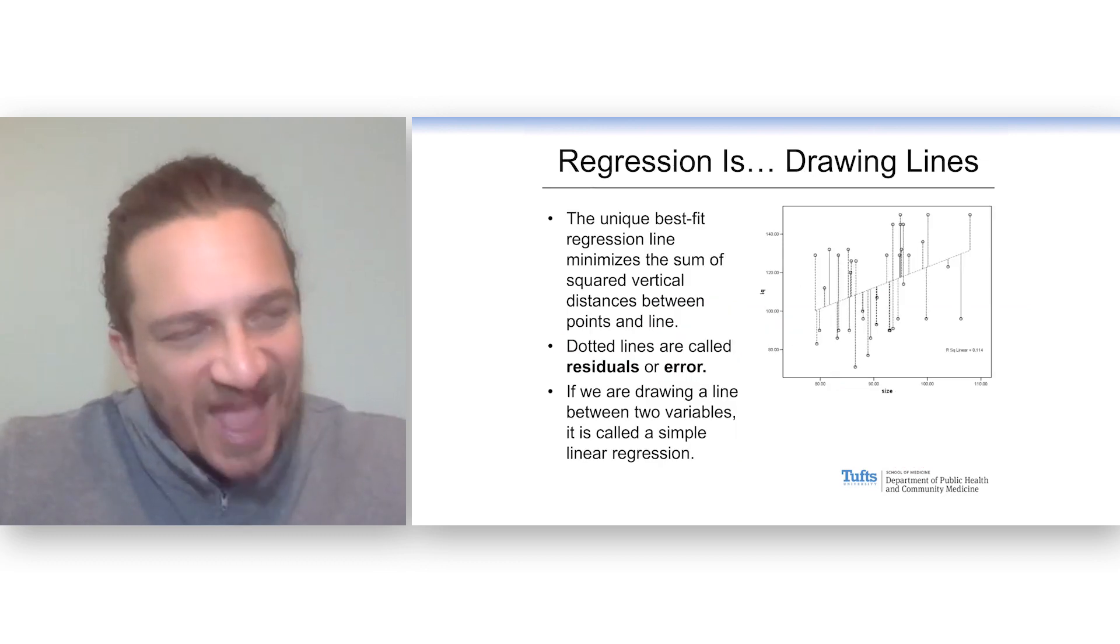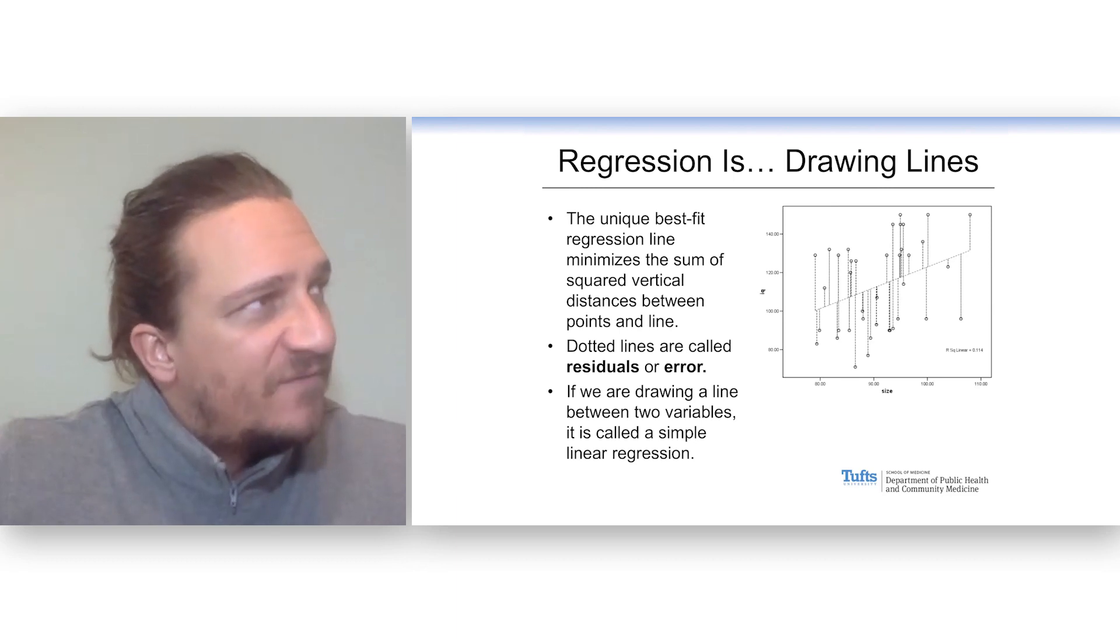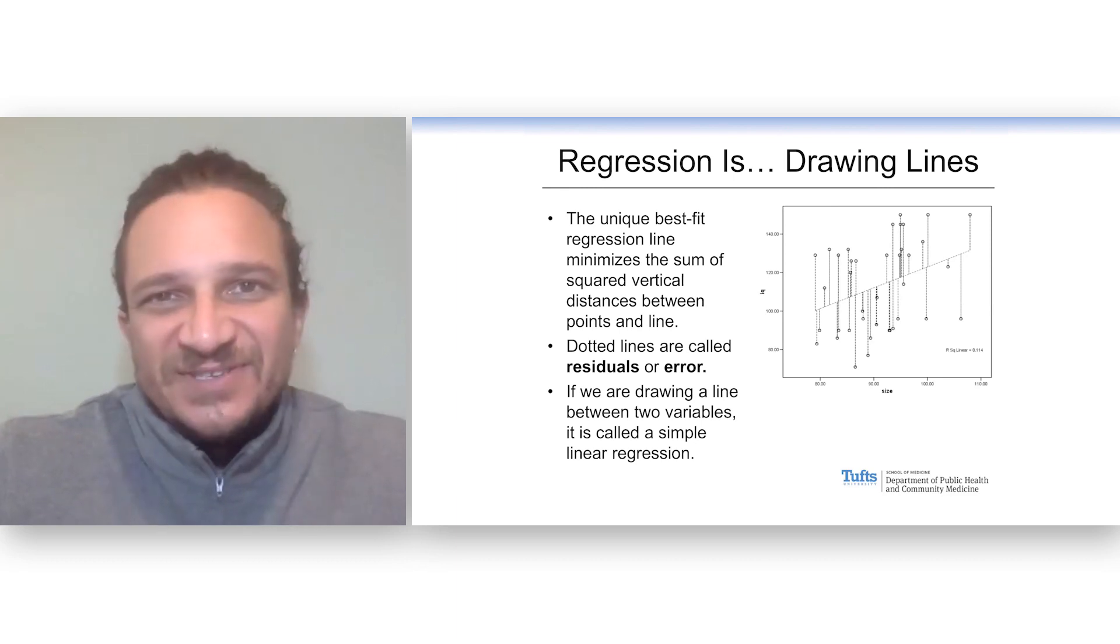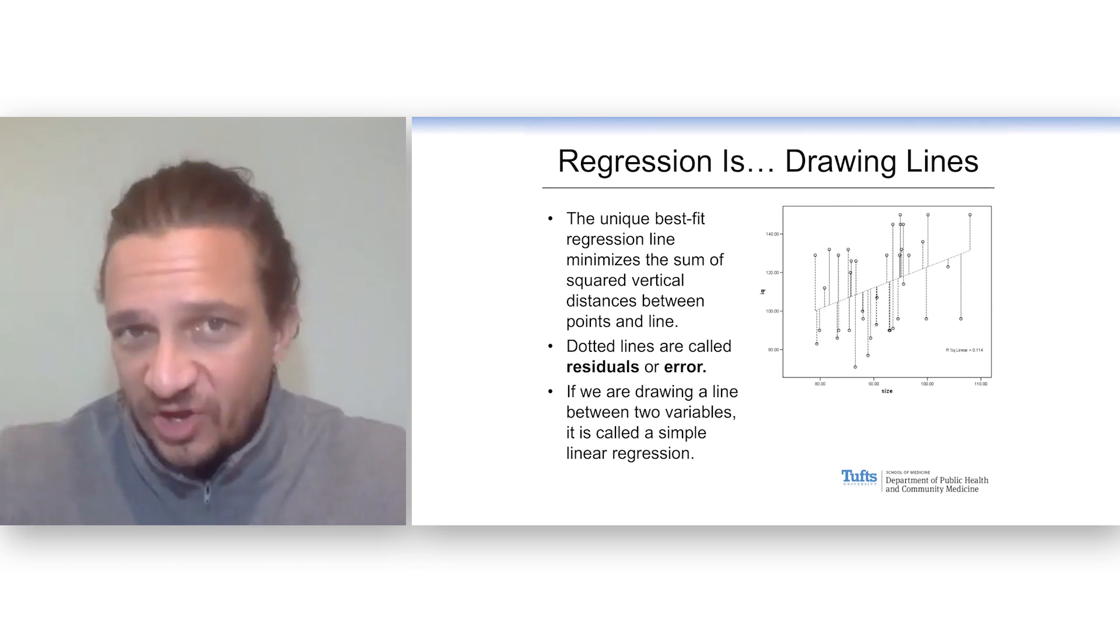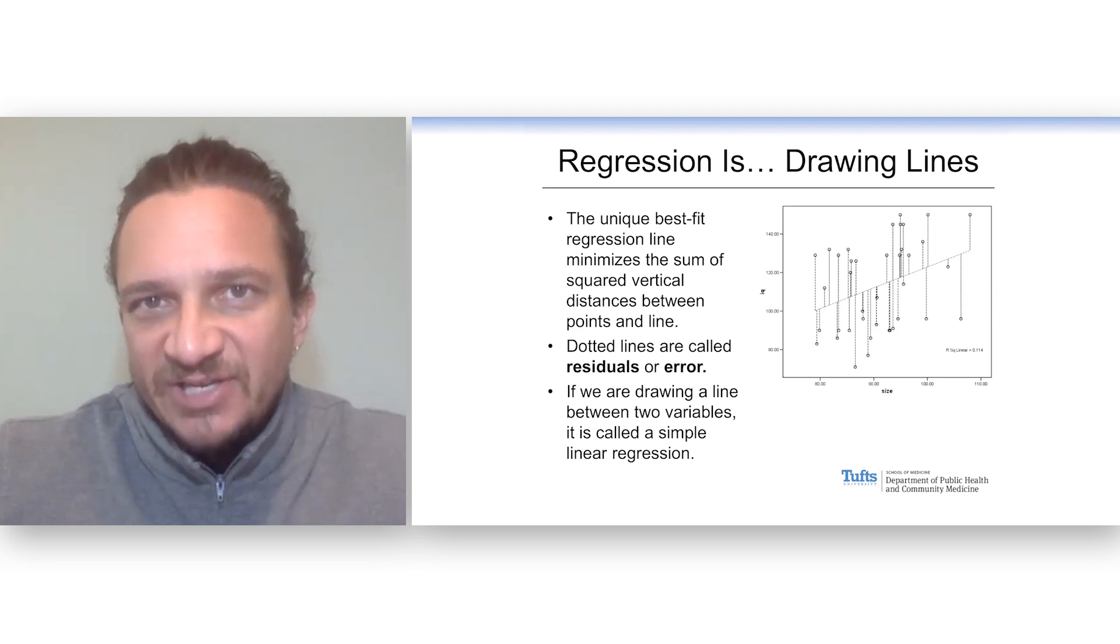The correlation coefficient answers what is the linear relationship between the two variables, but it often leaves us begging a little bit more. If I told you there's a relationship with how many cigarettes you smoke and how long you live, and it's statistically significant. The more cigarettes you smoke, the shorter your lifespan. You would say, okay, but how strong is that relationship?